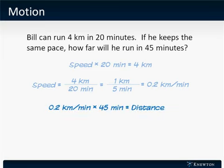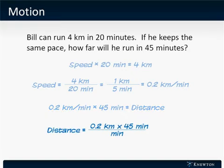Now we use the formula again, this time using time equals 45 minutes, and the speed we just calculated, 0.2 kilometers per minute. Distance equals 0.2 times 45, or 9 kilometers.